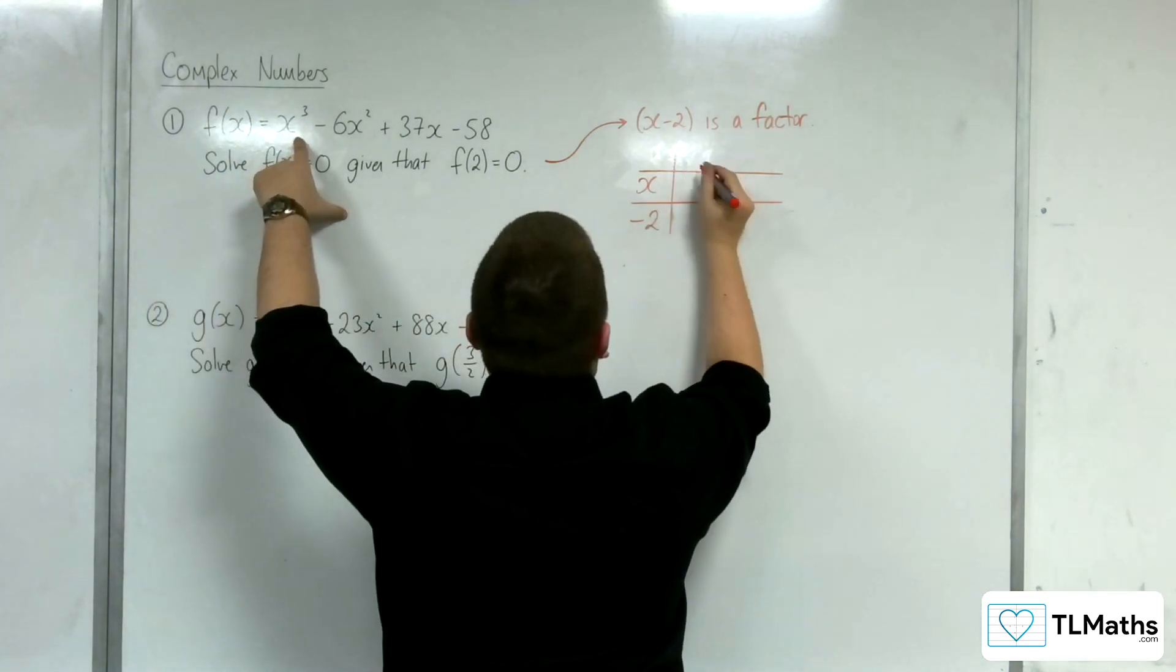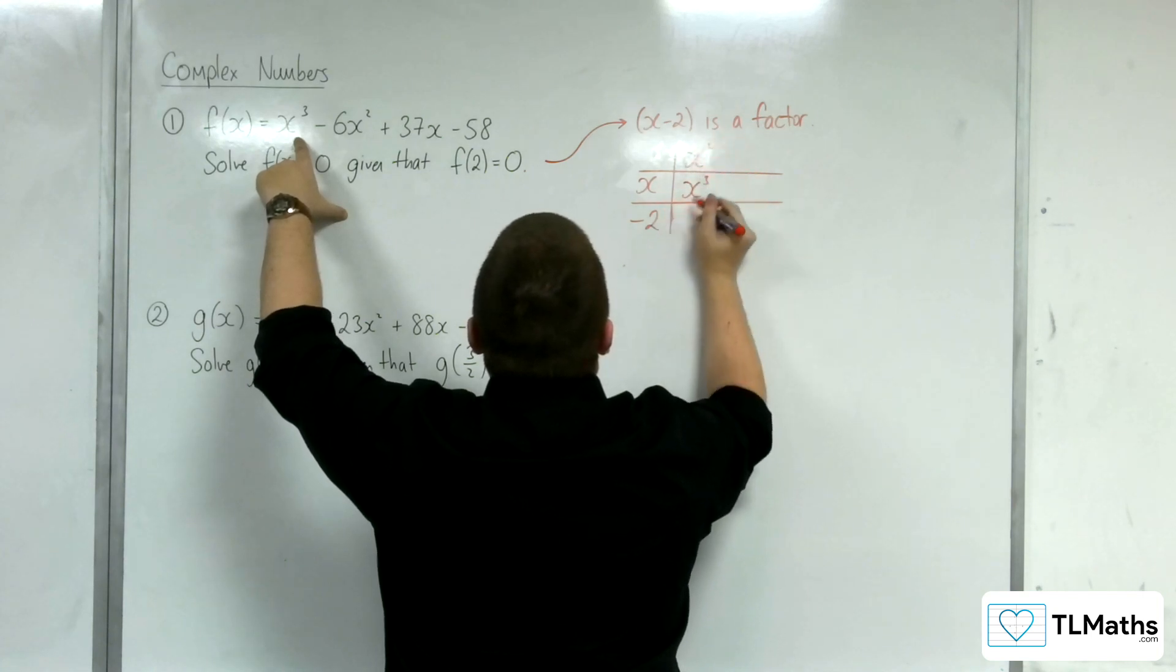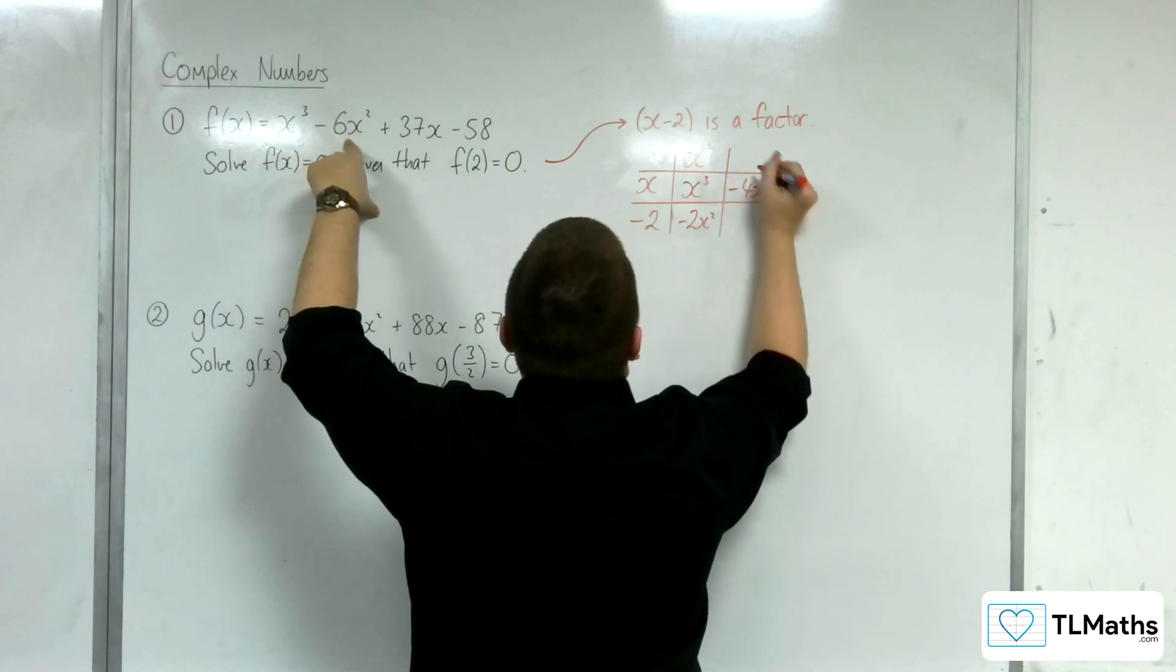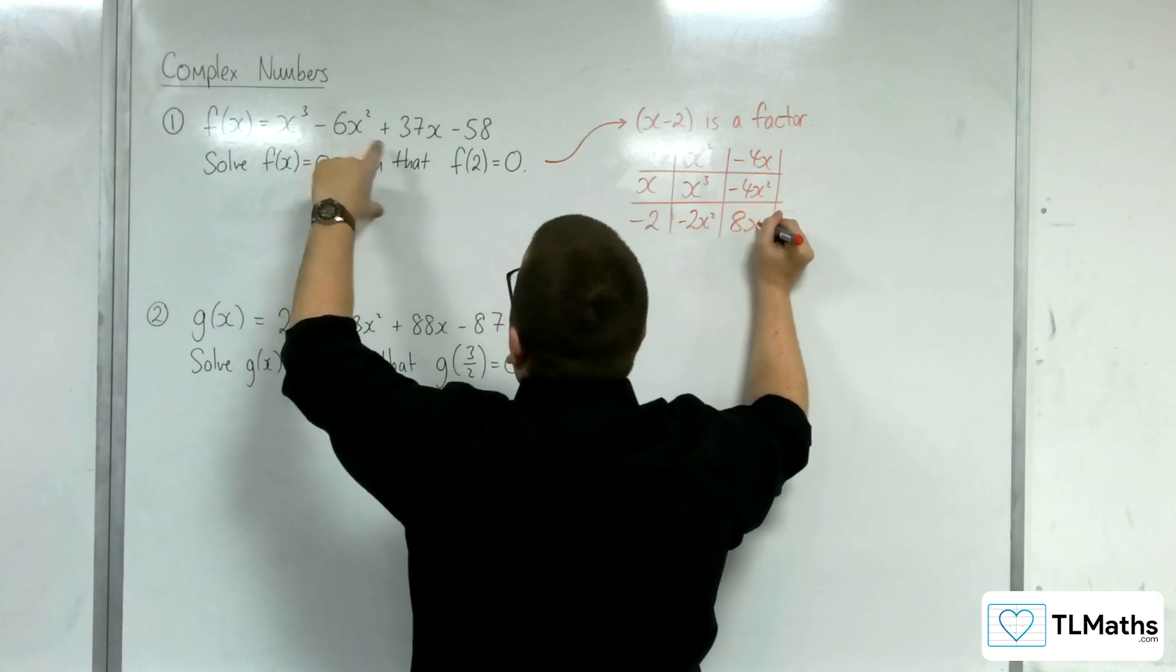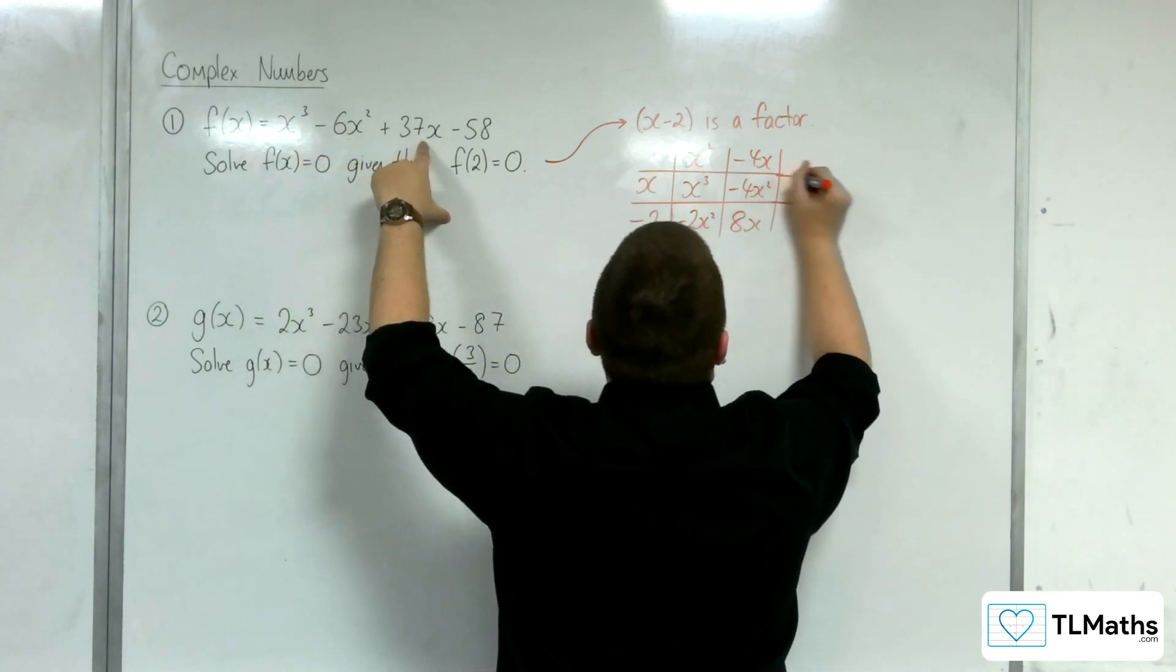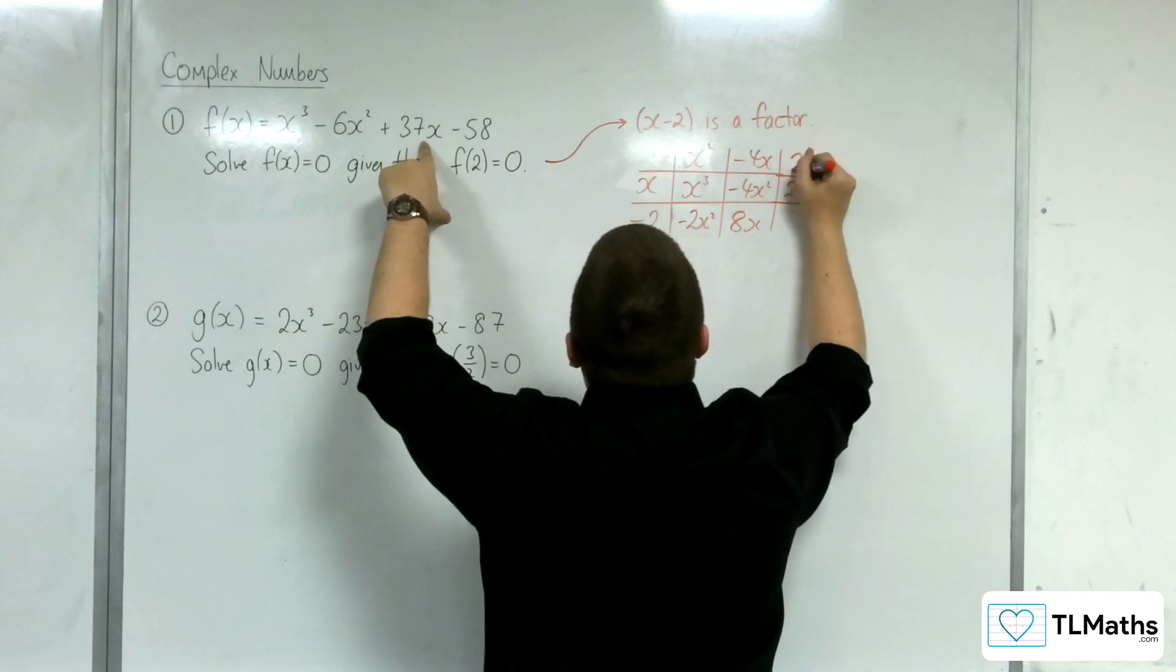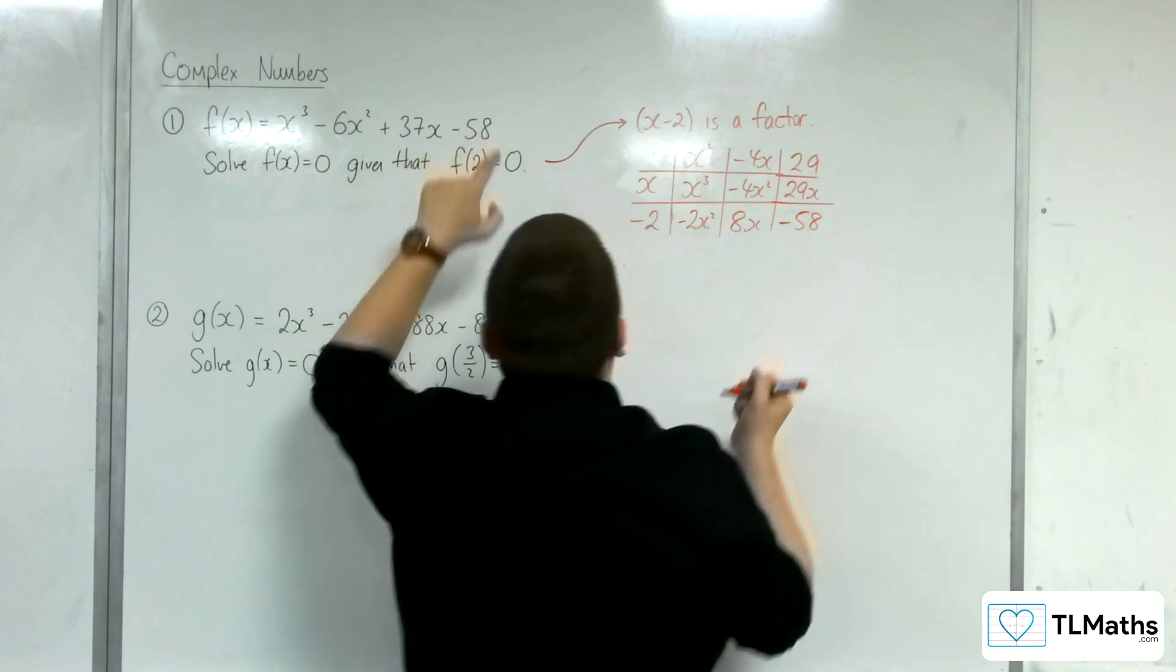So, x into x³ goes x². x² times (x - 2), so -2x². I want -6x², so take away 4x². Take away 4x. 8x, I want 37x. And so, I'm going to have to have 29x there. So that would be 29. 29 times -2 is -58, which is what I've got there.